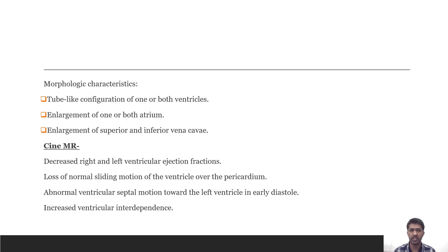Due to constrictive pericarditis, the ventricular chambers may assume a tubular-like configuration with enlargement of one or both atria and enlargement of the superior and inferior vena cava. Cine images may show decreased right and left ventricular ejection fraction, abnormal septal motion towards the left ventricle in early diastole and increased interventricular interdependence.